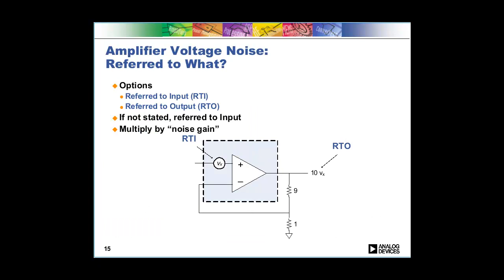The thing to pay attention to when you see noise specified is to determine whether it's referred to the input or referred to the output. It's a very simple equation between the two. If something is referred to the input, it's at the input. If it's referred to the output, it's at the output. And you just use the gain in between to convert between the two. For example, in this picture, we've got an amplifier and a gain of 10. If you want to figure out what the noise at the output is, you just multiply the noise at the input by 10. Very straightforward.